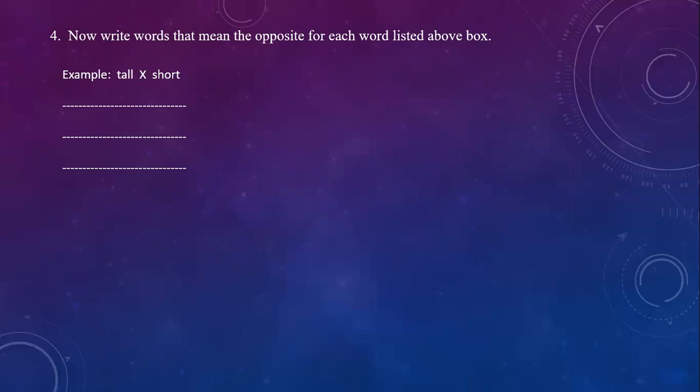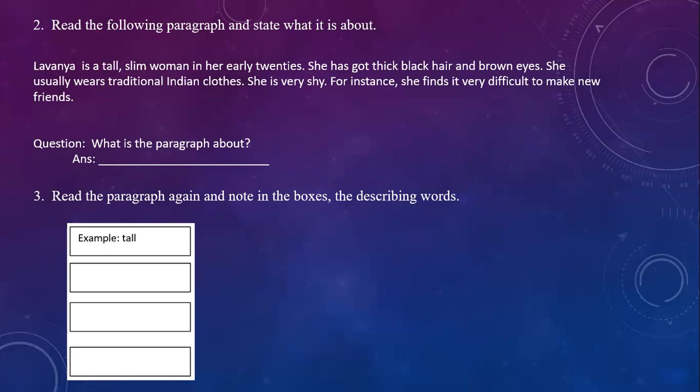Now write words that mean the opposite for each word listed. Tall — opposite is short. Slim — opposite is fat. Black — opposite is white. We cannot say brown has a direct opposite. Shy — opposite is bold or strong.